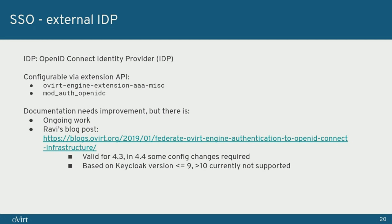OpenID Connect is the protocol used with Keycloak to provide SSO. It is a simple identity layer on top of OAuth 2.0. It allows clients to verify the identity of the end user based on authentication performed by an authorization server, as well as obtain basic profile information about the end user in a REST-like manner. OpenID Connect allows clients of all types — web-based, mobile, and JavaScript clients — to request and receive information about authenticated sessions and end users.